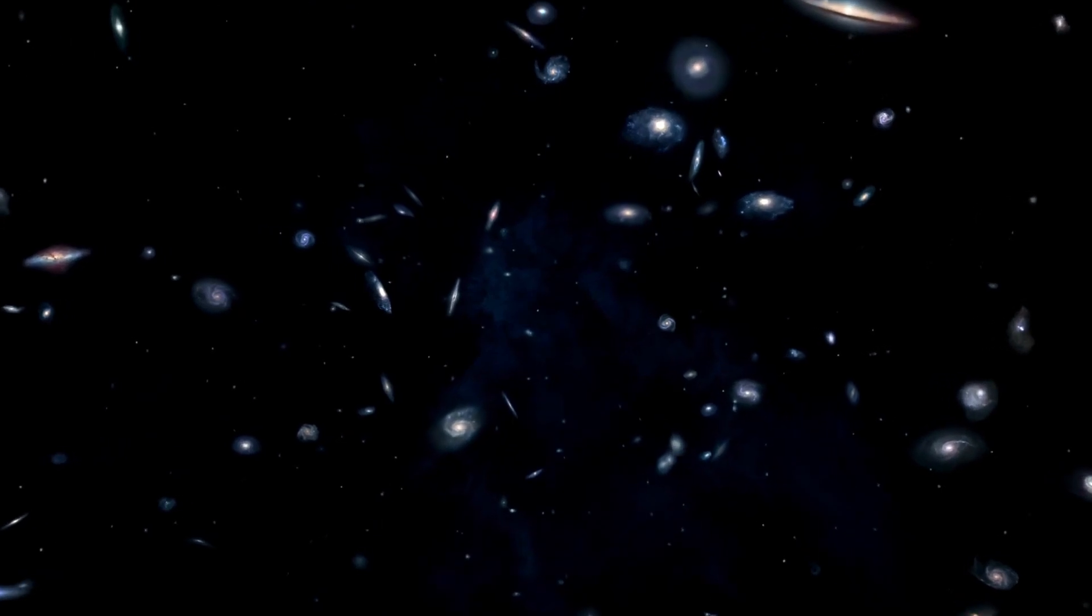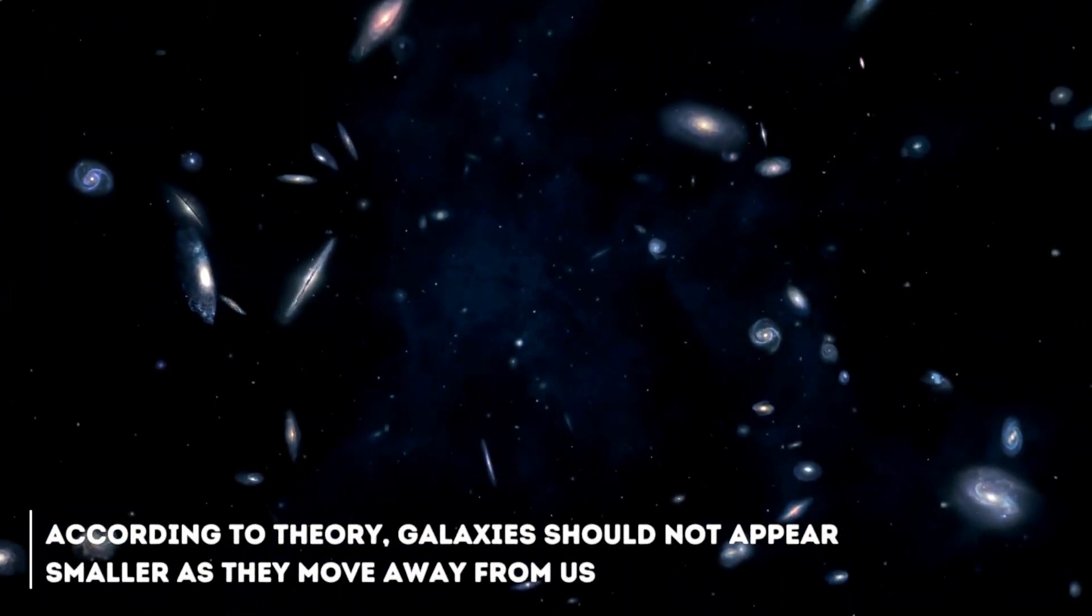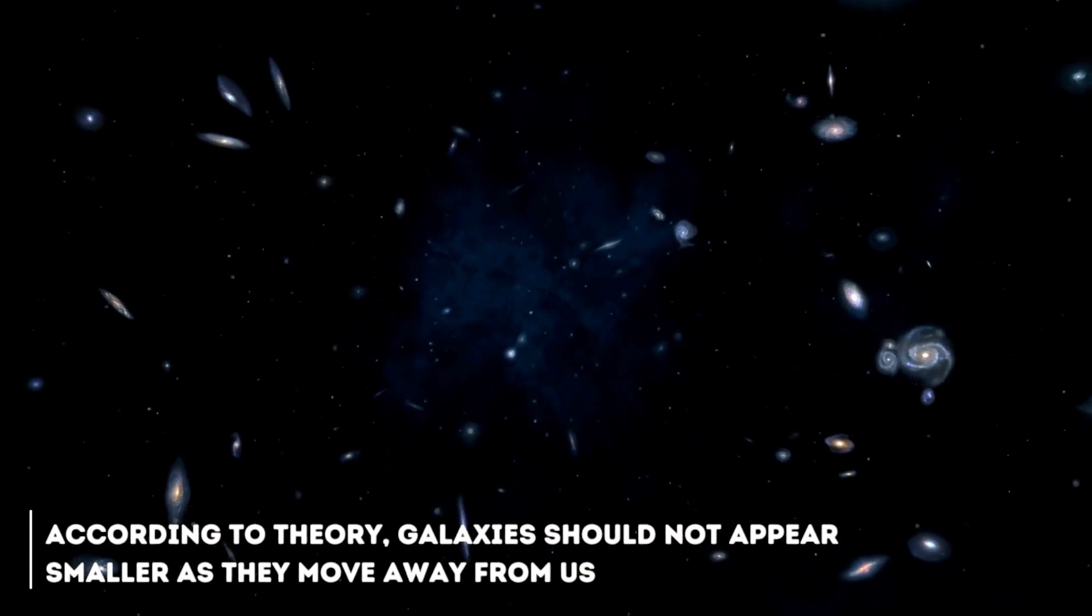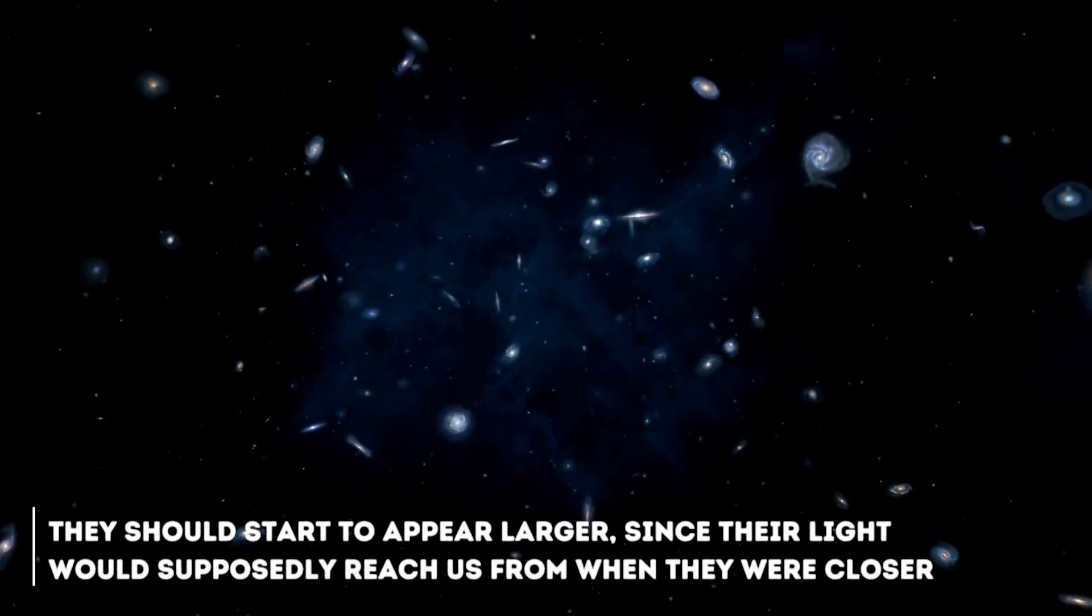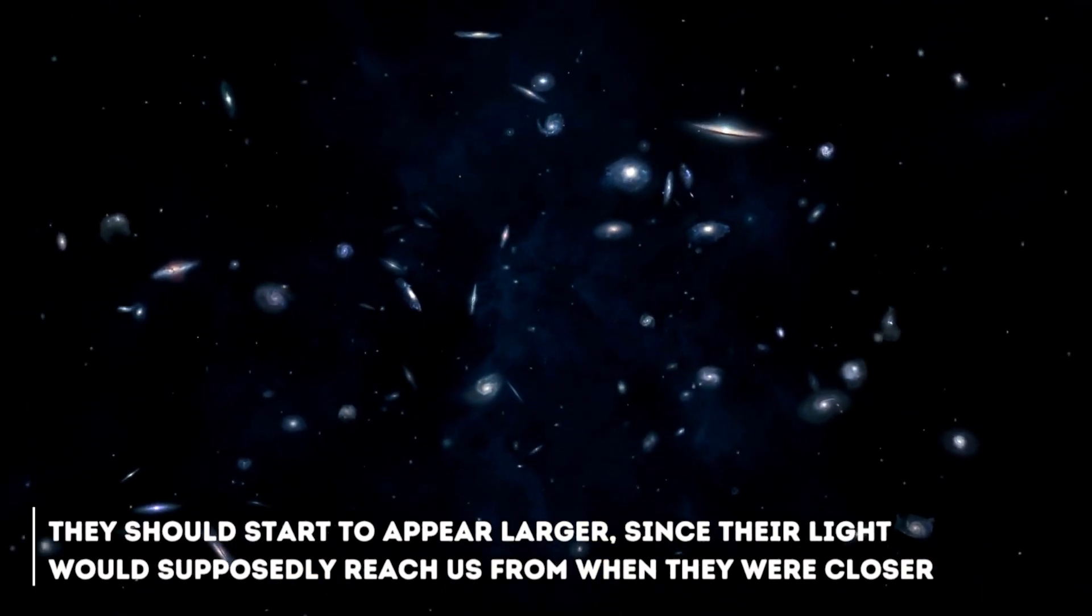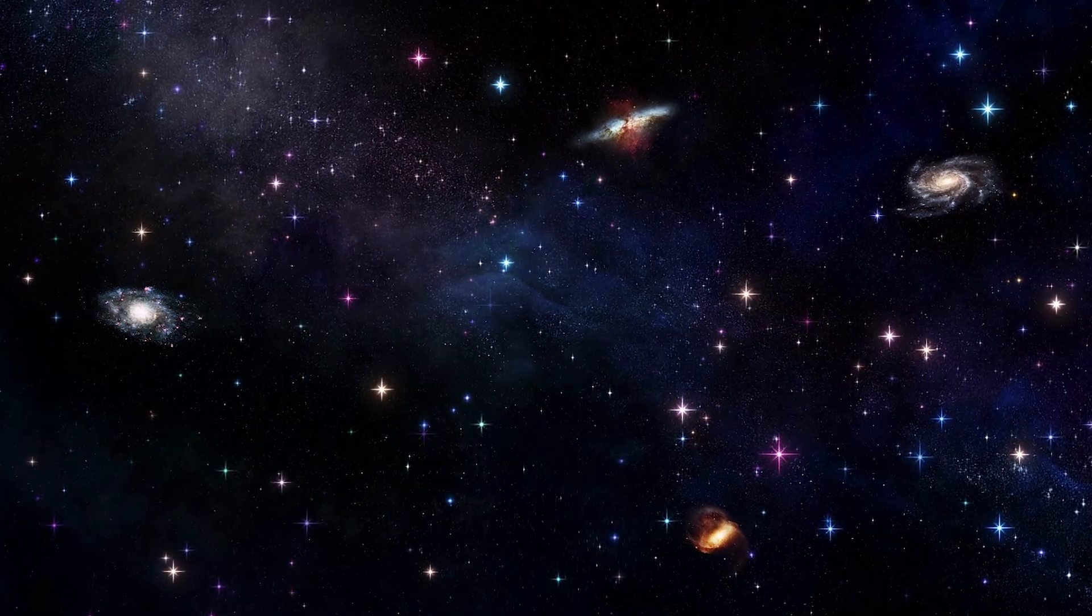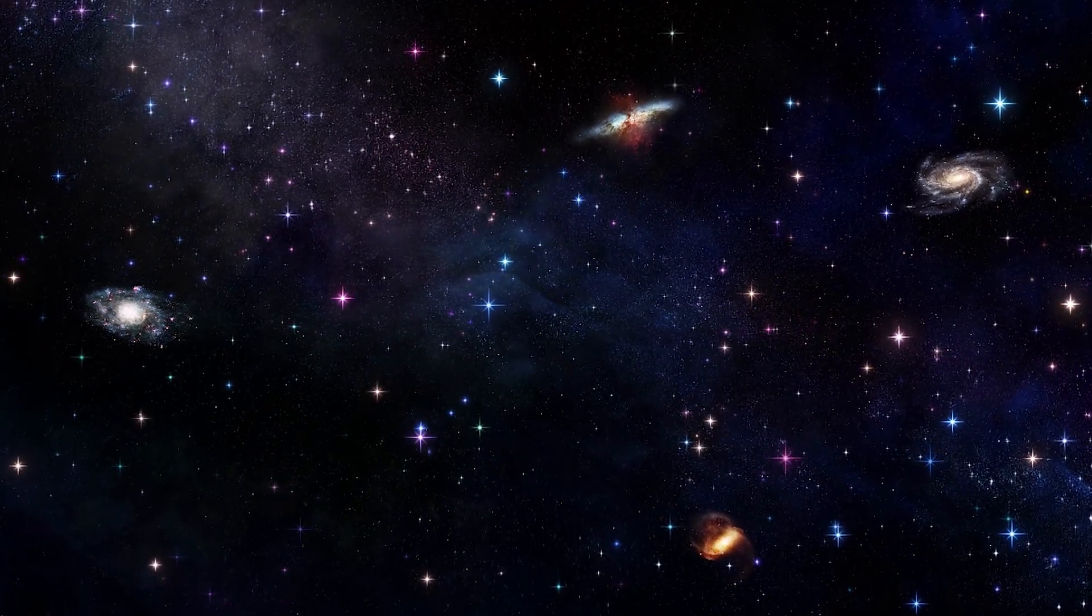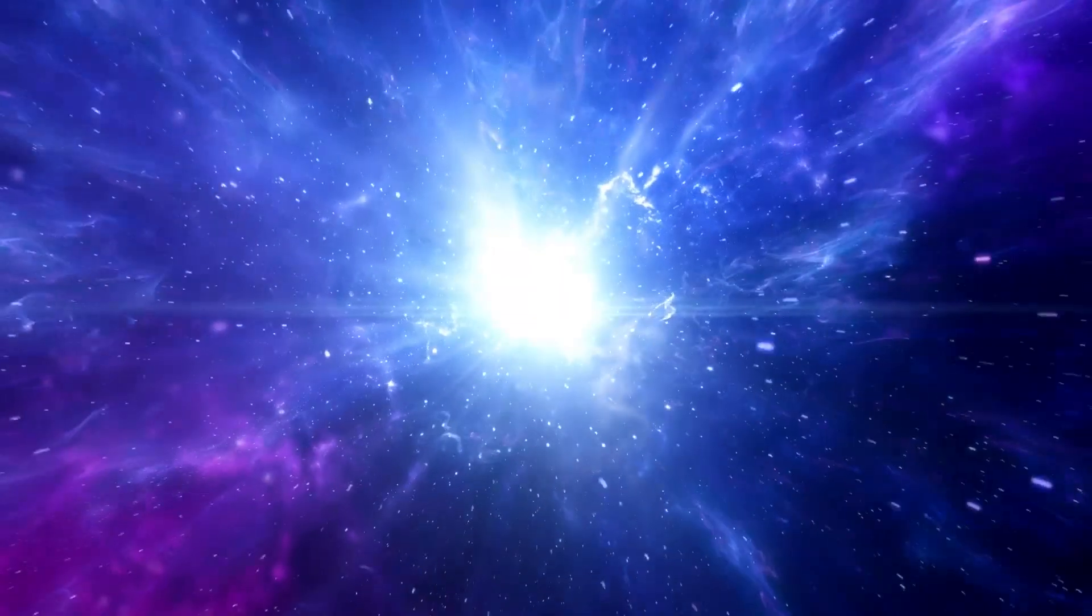Let's try to simplify the puzzle of these discrepancies. Let us imagine that the universe is an expanding balloon. According to the theory, galaxies should not appear smaller as they move away from us. At a certain point, they should start to appear larger, since their light would supposedly reach us from when they were closer. This strange but essential twist on the concept of an expanding universe is seen in the James Webb's images, where galaxies appear to be the same size as those close to us. The theory may be actually quite wrong about several things, surprisingly enough.